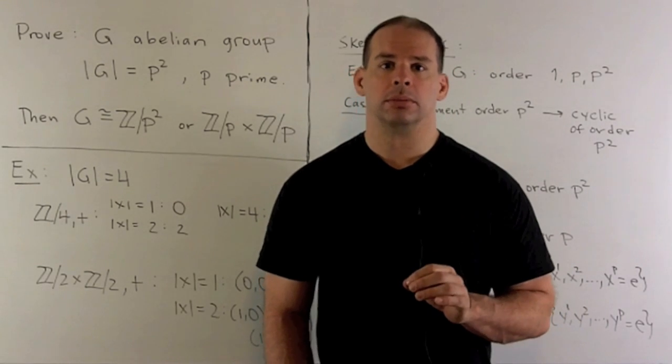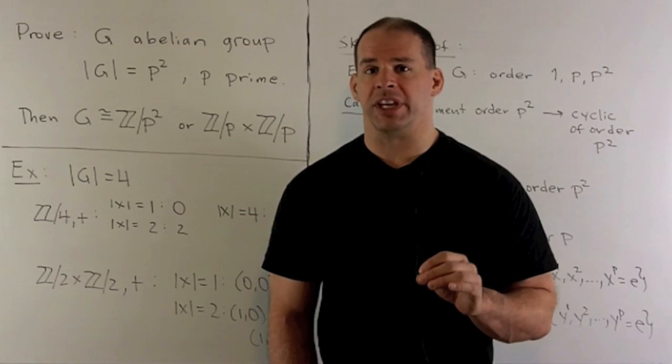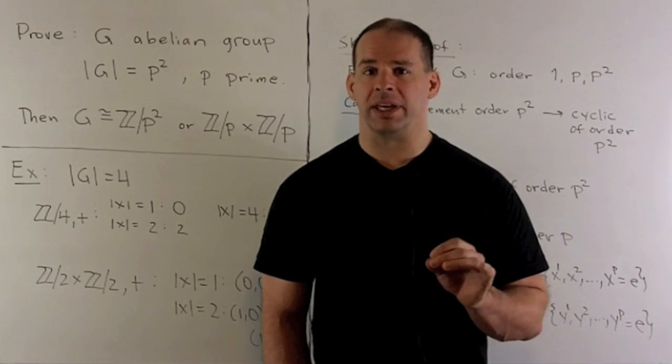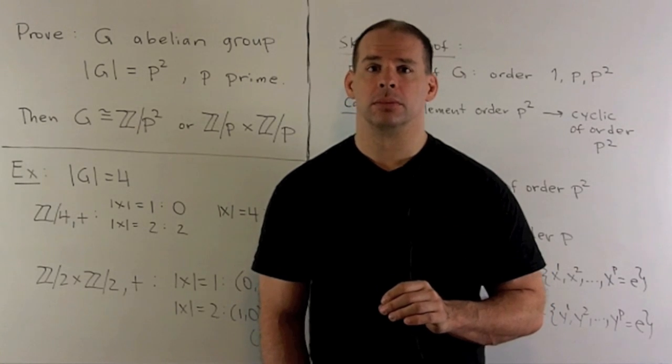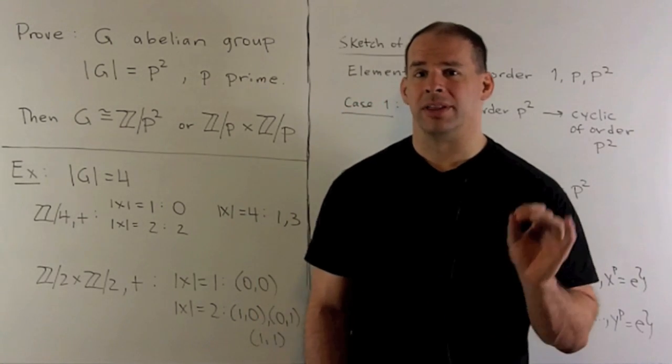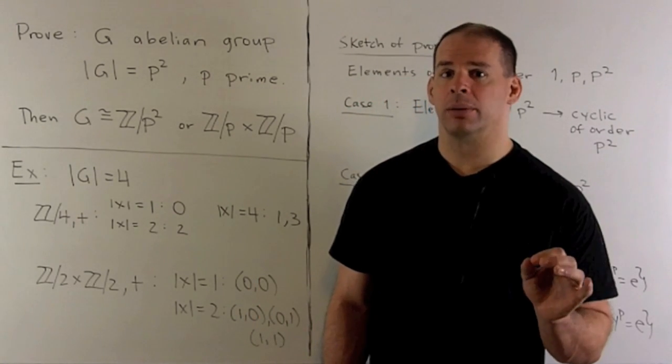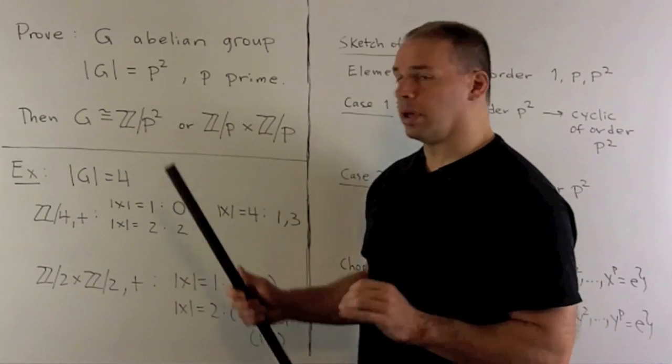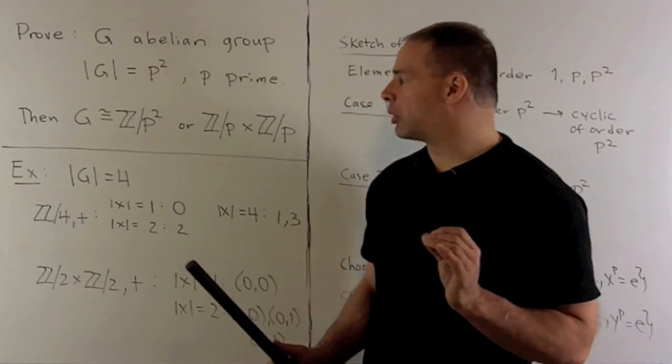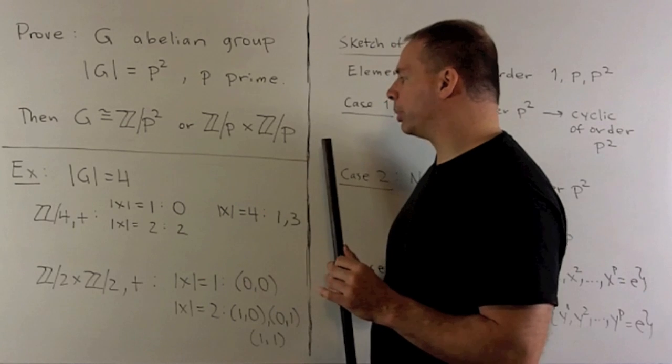Let G be an abelian group. We assume that the order of G is p squared where p is a prime number. We want to prove that G is isomorphic to either the cyclic group of order p squared or the product of two cyclic groups of order p.